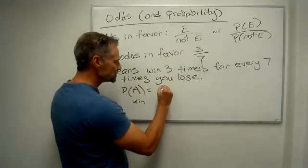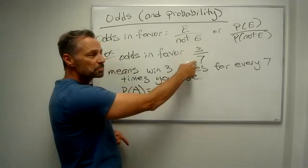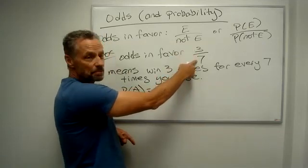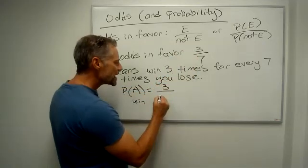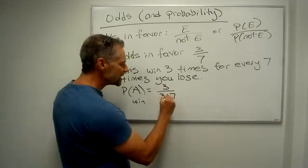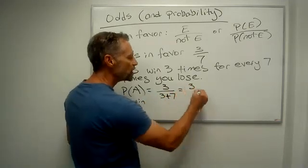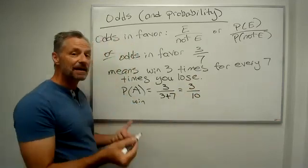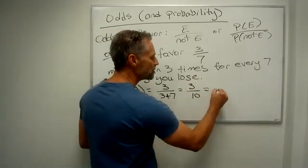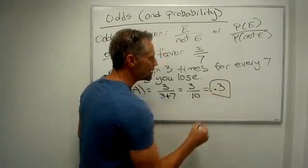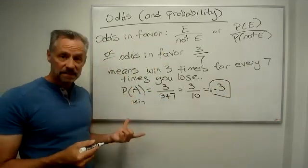but we don't just play seven times. We won three times and lost seven times, so we actually played three plus seven, which is ten times. So we won three times out of ten, giving us a probability of 0.3. That's the probability of a win.